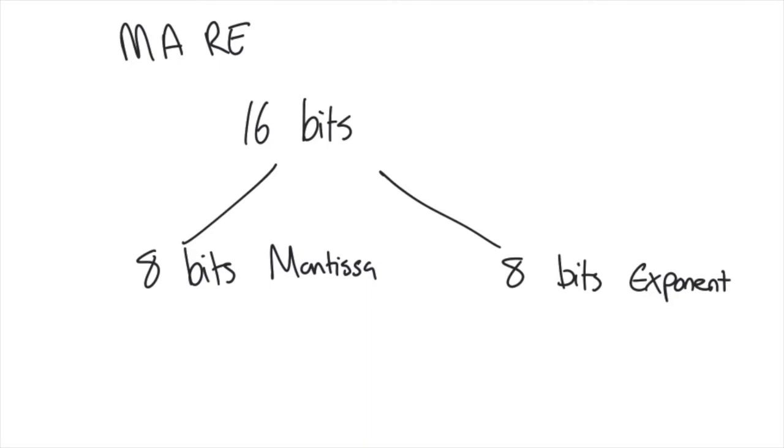That doesn't mean necessarily that I would do that. I could actually say, right, I'm going to have 12 bits for the mantissa and 4 bits saved for the exponent.